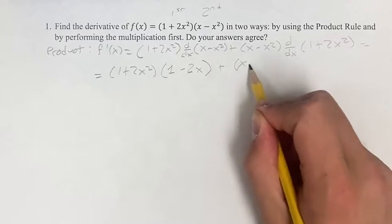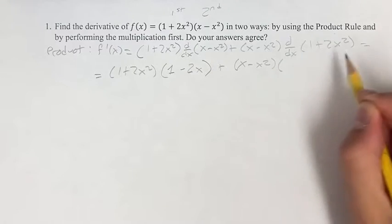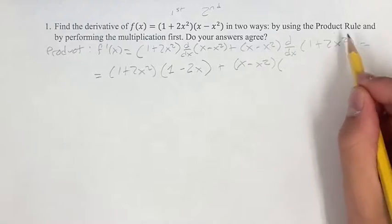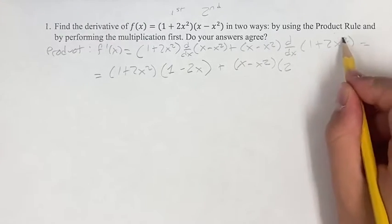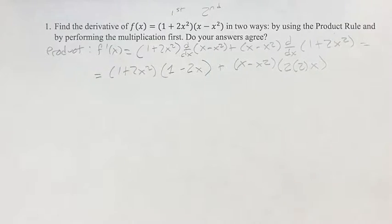...plus (x - x²) times the derivative of (1 + 2x²). The derivative of 1 is 0, so we can just ignore that. But the derivative of this, we get the coefficient up front, bring down the exponent, times x to the 2 minus 1, which is just x to the 1.